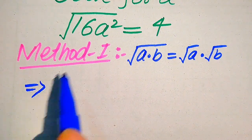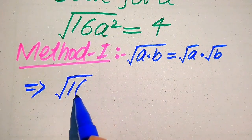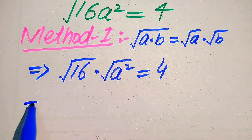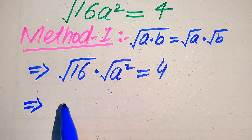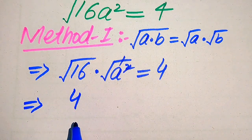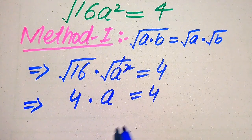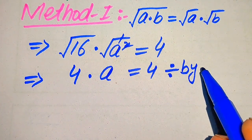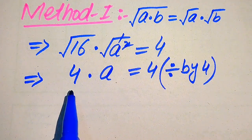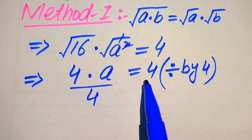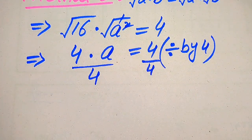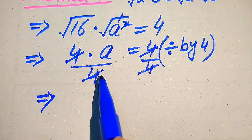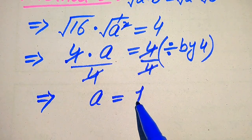So here we need to separate the square root on both values. It will be written as square root of 16 multiplied by square root of a squared equals 4. Now, the square root of 16 equals 4, and the square root of a squared equals a, so we get 4a equals 4. Now our target is to find the values of a, so we divide both sides by 4. This 4 cancels with this 4, and we get a equals 1.